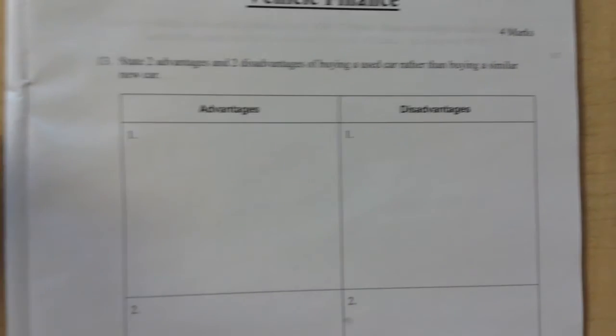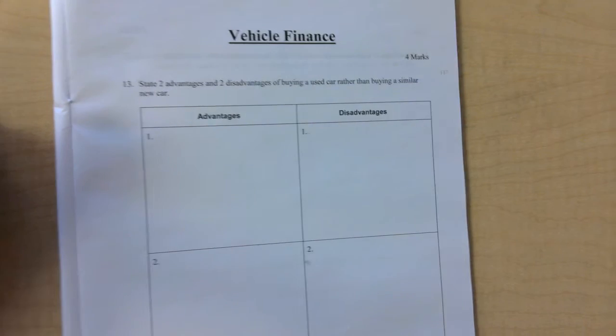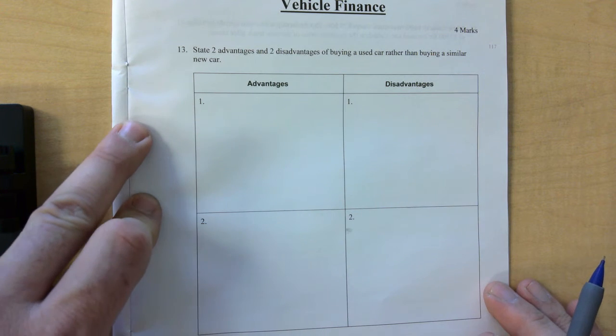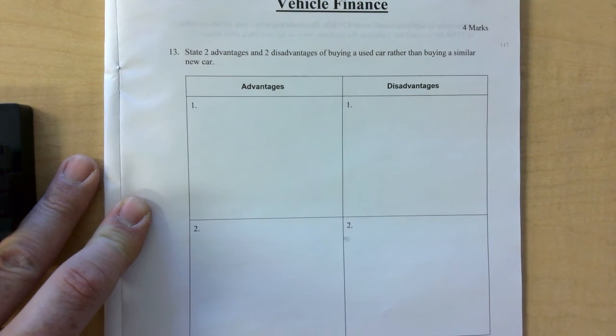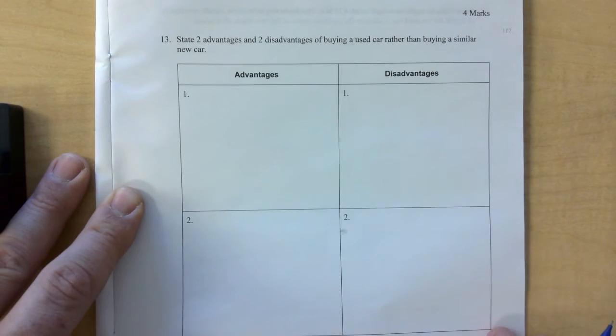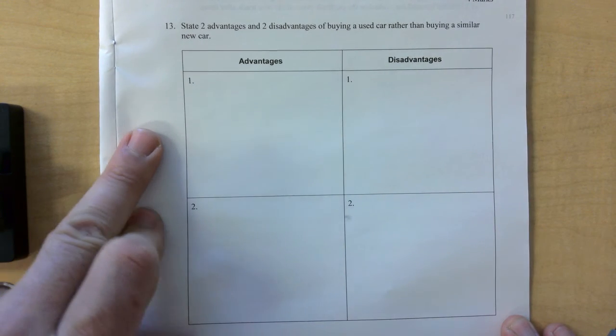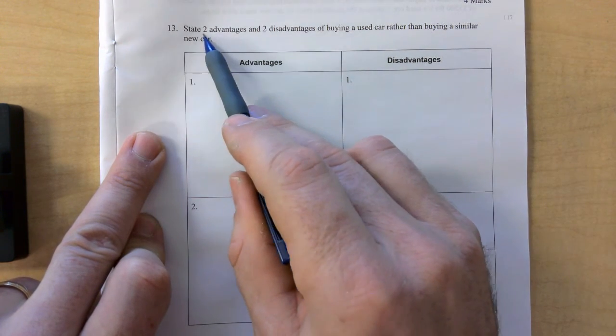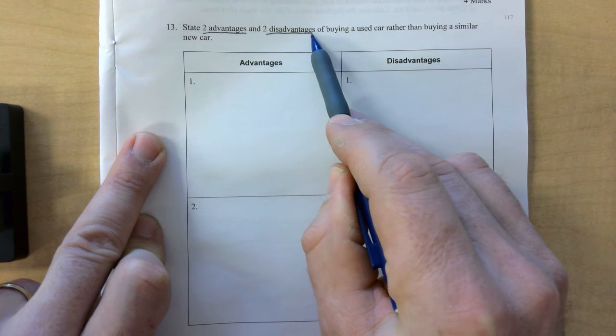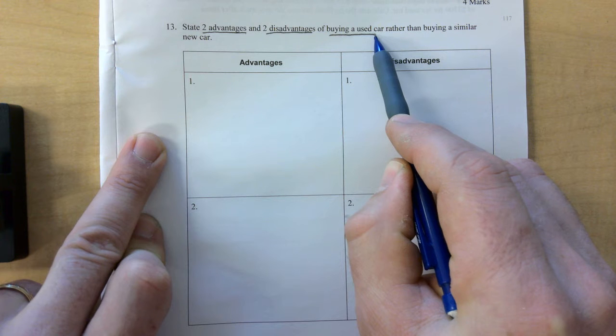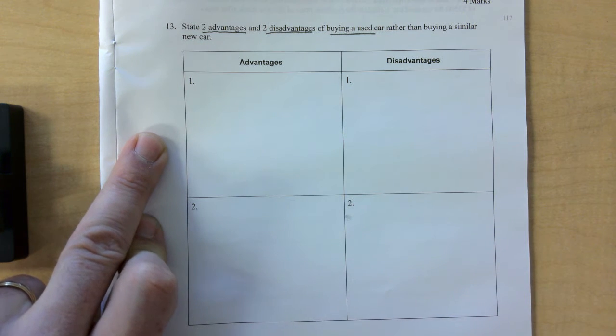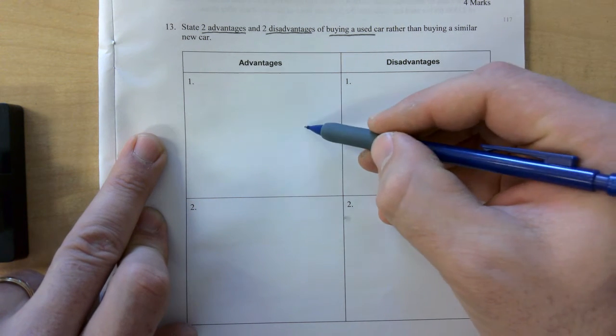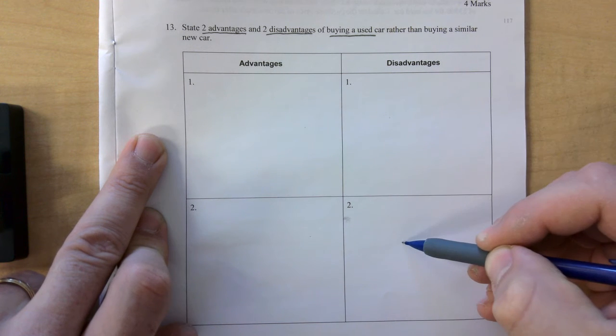And notice this chart here, vehicle finance. So now we're moving over to vehicle finance. So we're on page 14. Vehicle finance territory now. State two advantages and two disadvantages of buying a used car rather than buying a similar new car. So you have to be very careful when you read these. You want two advantages and two disadvantages.